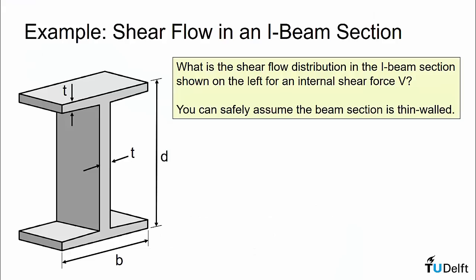In this example, we are going to examine the shear flow distribution in a thin-walled I-beam section shown on the left. The problem asks us to determine this shear flow distribution for an arbitrary internal shear force V that can occur in the section, and the problem also specifies that it is safe to assume that the beam section is thin-walled.